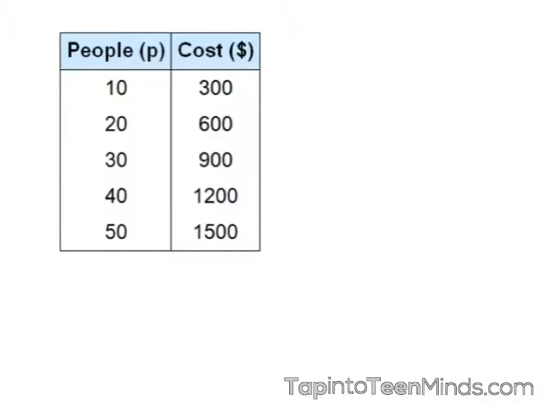Looking at this table, it doesn't appear to be a direct variation because our first value does not start at 0 in the Y column. However, you'll also note that the first value in the X column does not start at 0. So something we need to be aware of is the fact that the origin could be hidden in the table. As the X's increase by 10, our Y values increase by 300.